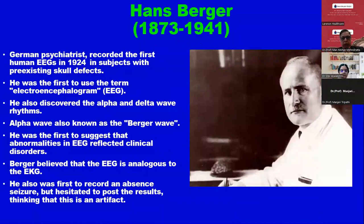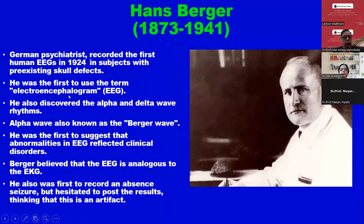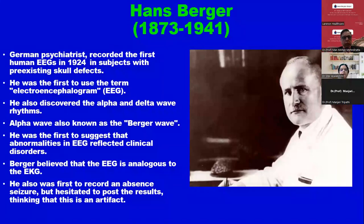You will have to remember this date. Like we remember Parkinson in 1817, for EEG it is 1924, recorded in subjects with pre-existing skull defects — because if there is a skull defect, there will be high amplitude activity. He was the first to use the term electroencephalogram. The term EEG was actually given by Hans Berger. He also discovered the alpha and delta waves, and alpha wave is also called Berger rhythm or Berger wave. He was the first to suggest that abnormalities in EEG reflected clinical disorders, and believed the EEG is analogous to the EKG.